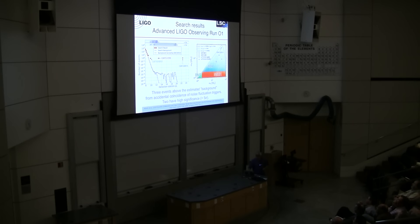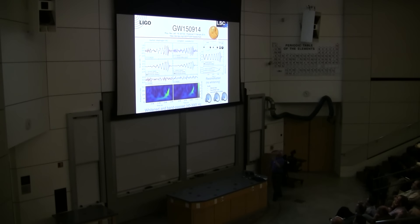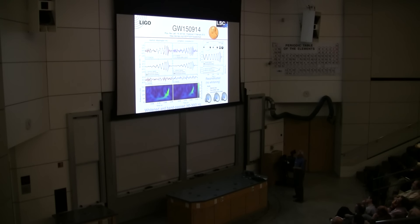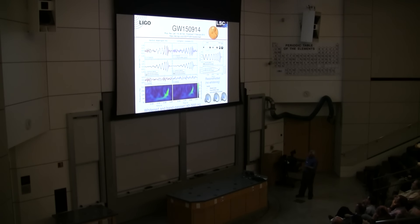Three events from Advanced LIGO's first observing run. The first was the loudest — it was spectacular, and it got us a Nobel Prize. Here's a time-frequency spectrogram over two-tenths of a second. The signal sweeps from around 30 hertz to 400 hertz and then dies away — corresponding to the in-spiral, the merger, and the ring-down of the final black hole. The velocity of these stars went from one-third of the speed of light to two-thirds of the speed of light before they merged together.